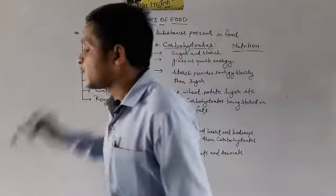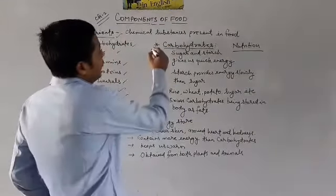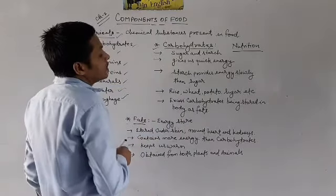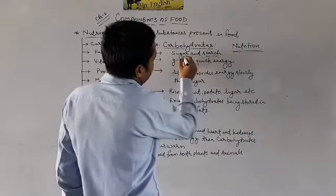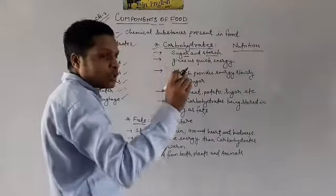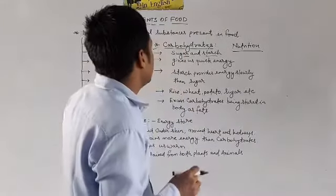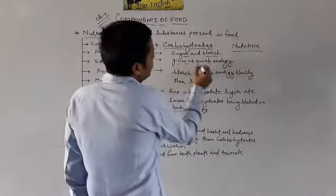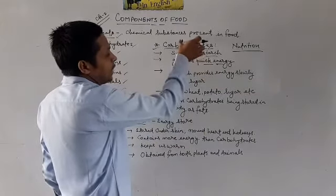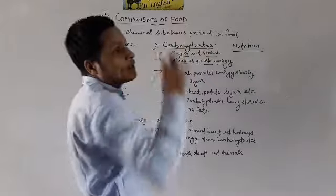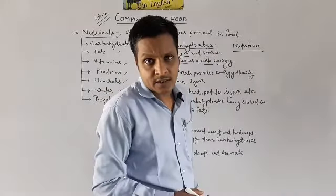Today I'm going to tell you about carbohydrates. Carbohydrates जो होते हैं, mainly जो sugar और starch होते हैं — यानि यह हमको sugar और starch के form में मिलते हैं. They give us quick energy — यानि sugar और starch means carbohydrates यह हमें instant energy provide करते हैं.